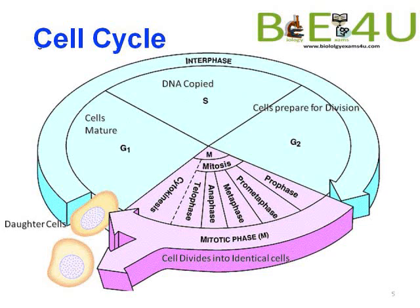After daughter cells are formed there is a G1 phase where the cell grows, enlarges, and prepares for DNA duplication. In the S phase the DNA is copied, so the cell has doubled its DNA. Then during G2 phase the cell prepares for mitosis, synthesizing the proteins required. When a cell enters mitosis during prophase, it will have two chromatids held at the centromere.